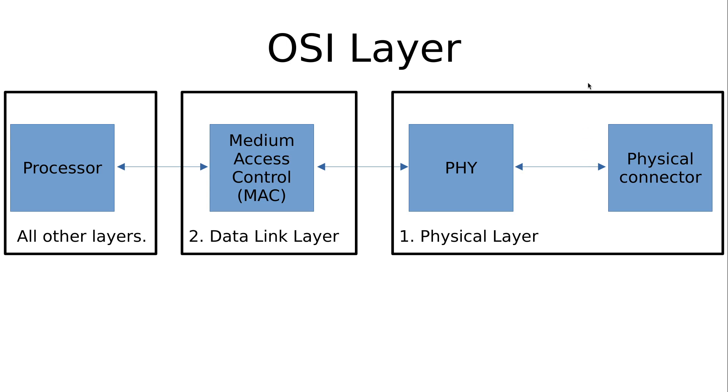Okay, so let's talk about the OSI layers to which we can put the various parts in. The physical connector and the PHY are normally described in the physical layer, layer one. The medium access control is typically located in the second data link layer and all other layers are implemented in the processor.